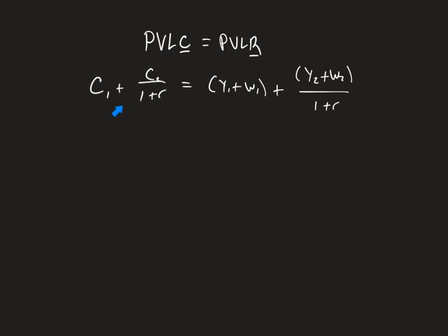As a review, consumption is c, income is y, wealth is w, r is the real interest rate. Okay, so our goal here is to get this into our normal y equals mx plus b form.